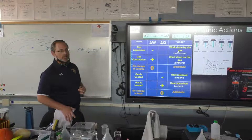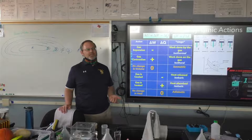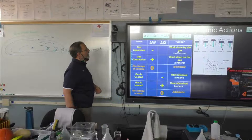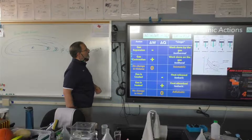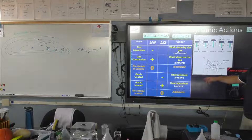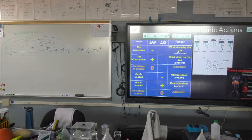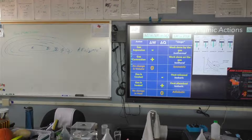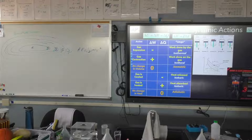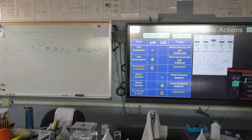Iso means the same — like an isosceles triangle. When a gas expands, it has a negative delta W because it is doing work on the environment. If the heat doesn't change, it's called isothermal. When a gas contracts and is compressed, delta W is positive. If a system has no change in volume, there cannot be a change in work — that is called an isometric process. If your volume doesn't change, your work doesn't change.